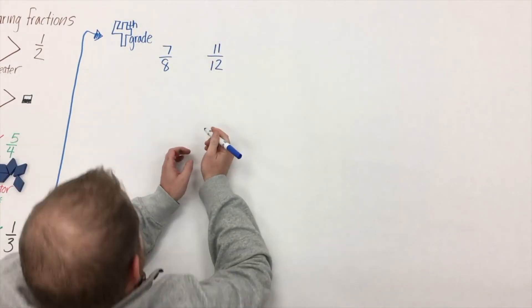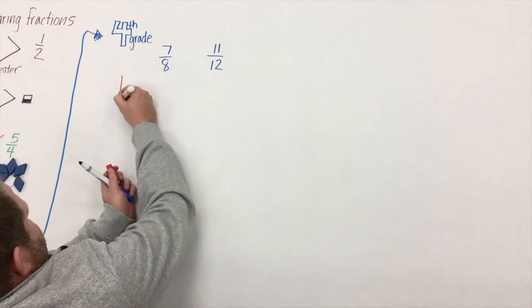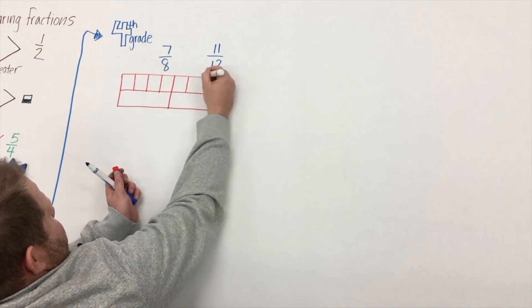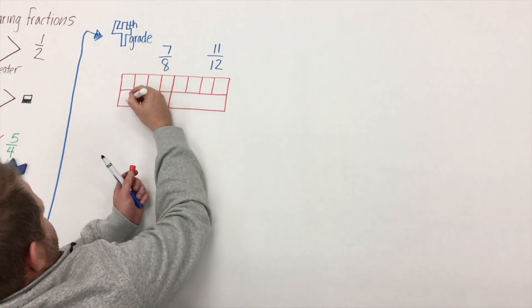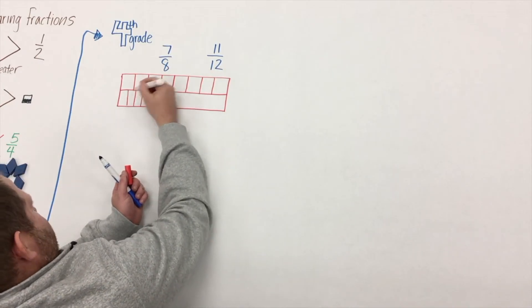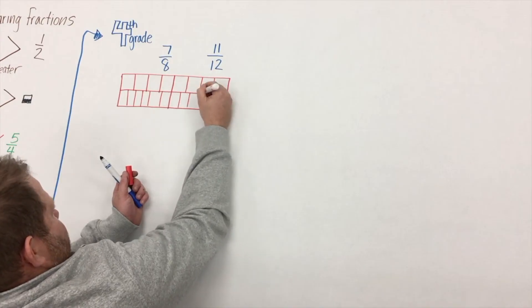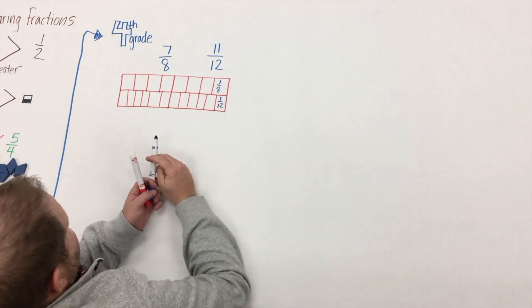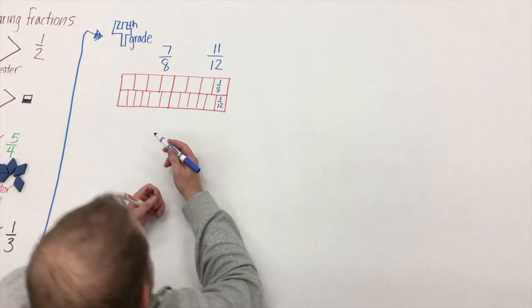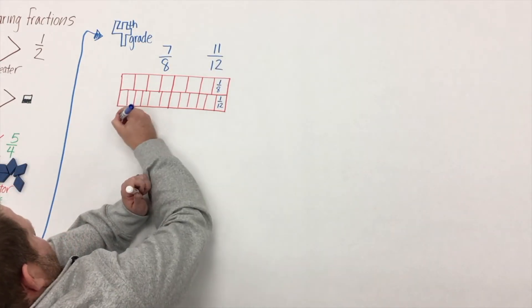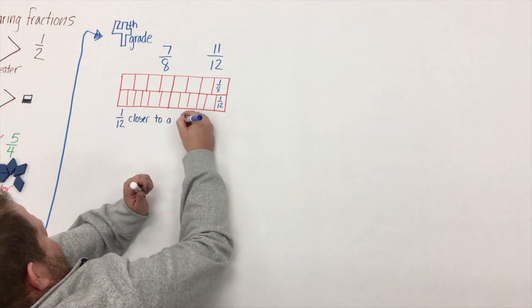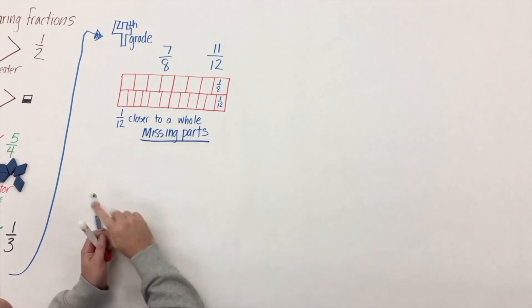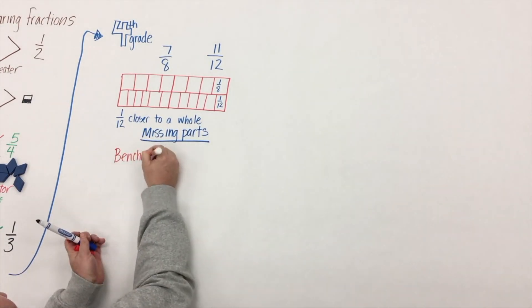So in fourth grade we continue to build students' understanding of comparing fractions. They come to us with this understanding of common denominators, common numerators, and here's another strategy students can use to compare seven-eighths and eleven-twelfths. Now they're both missing one part from a whole, but students know because of their understanding of a unit fraction that an eighth is actually larger than a twelfth and therefore it's farther away - it's missing a greater piece of its whole.